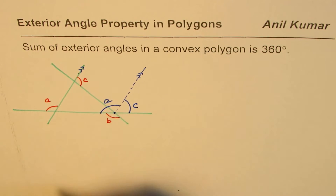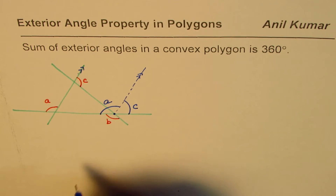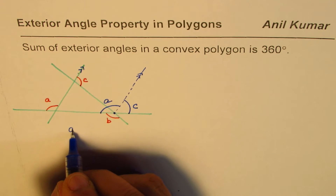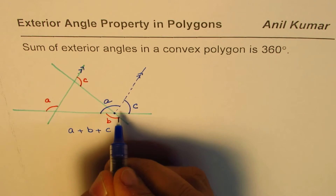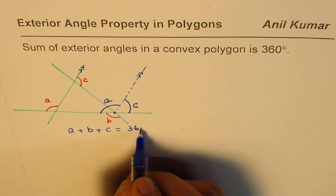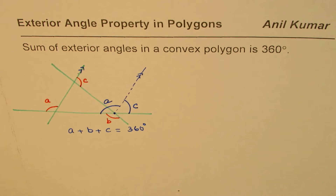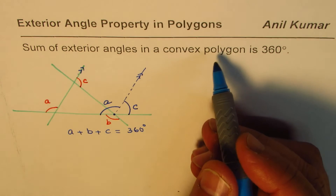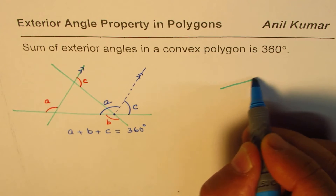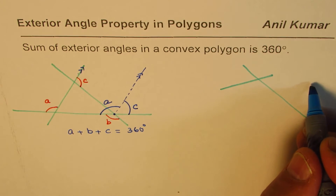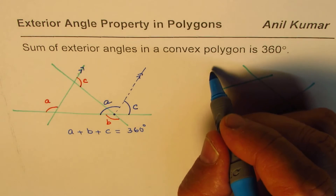If you concentrate on this point, A plus B plus C is one full circle, which is 360 degrees. That is how you can prove it. Now let's increase the polygon to four sides — a quadrilateral.